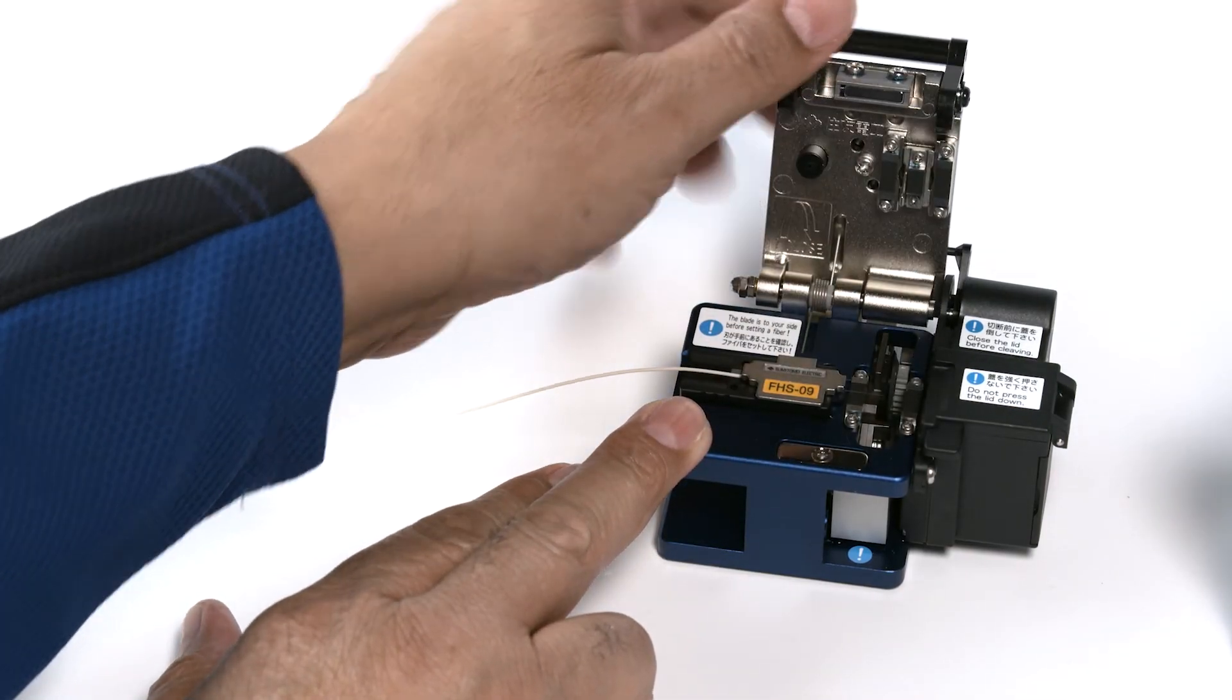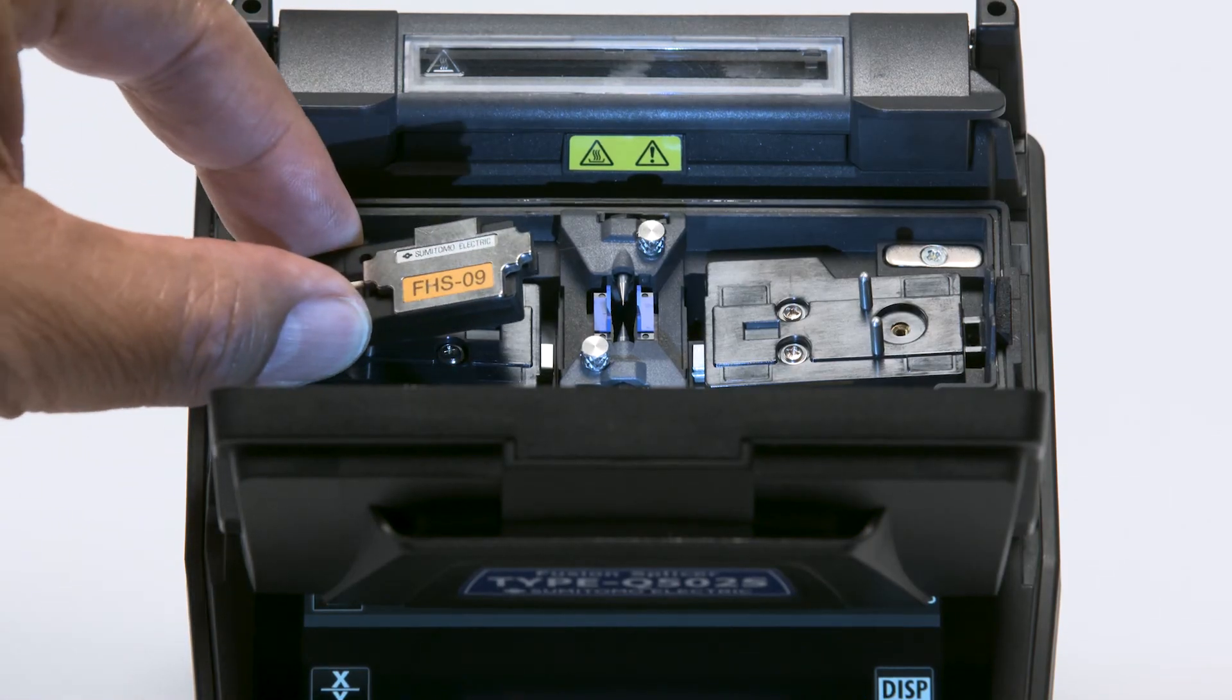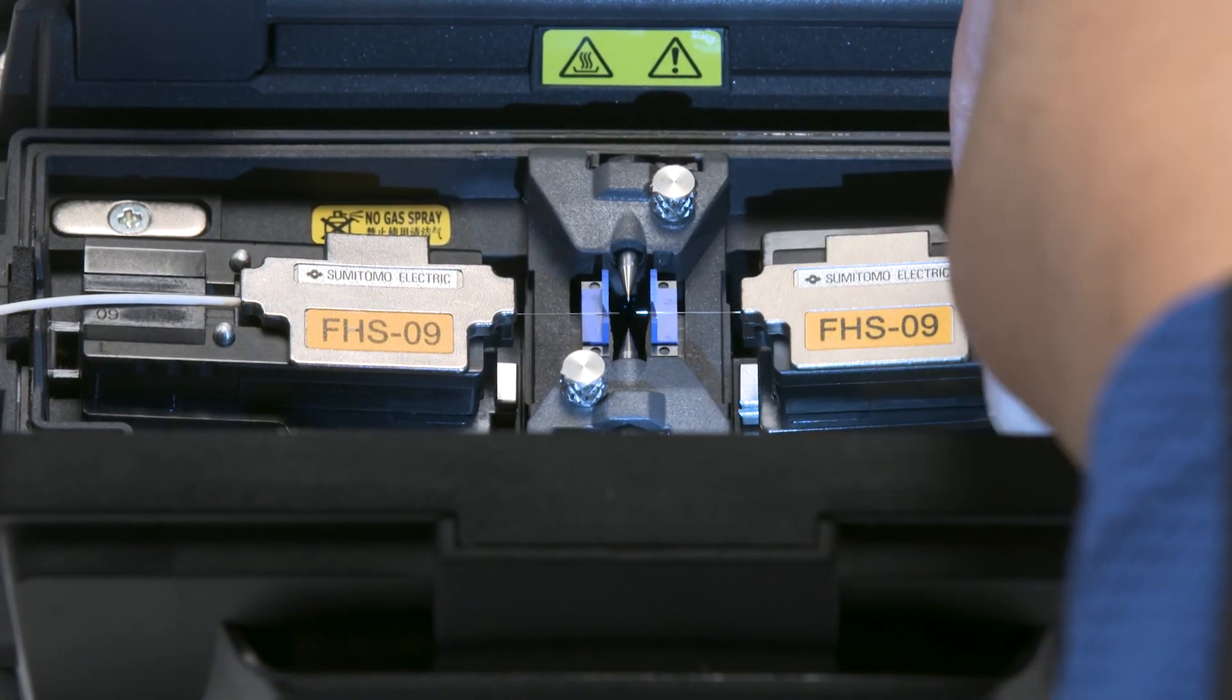Open the main lid and remove the holder. Prepared fiber should be immediately placed into the fusion splicer to keep the fiber from collecting dust or incurring damage.